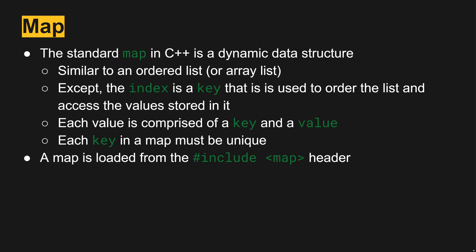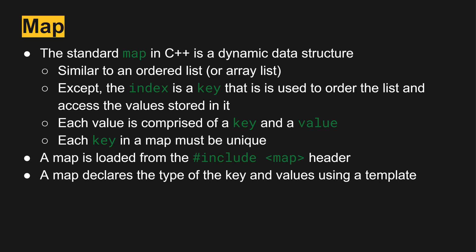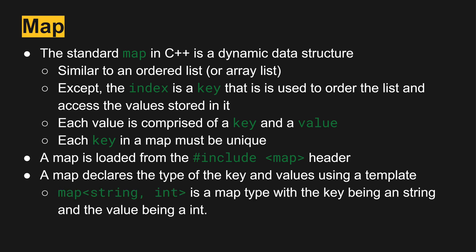The map is loaded from the map library header, and when using it, we declare the key and the value using a template. For example, something like map string int will give us a key of type string that holds int values. However, objects also work as well.